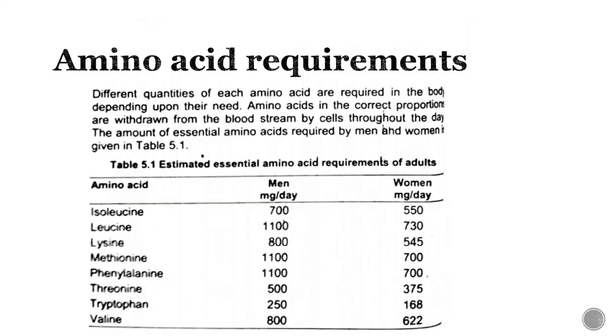For example, amino acids such as alanine, lysine, and methionine are used to make specific proteins. Each cell synthesizes only the specific proteins it requires.